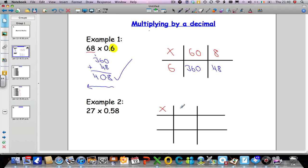So I'm going to split the 27 into 20 and 7 and split the 0.58. Well, I don't like multiplying by 0.58, so it's a lot easier to multiply by 58 first. So I'm going to split that into 50 and 8.